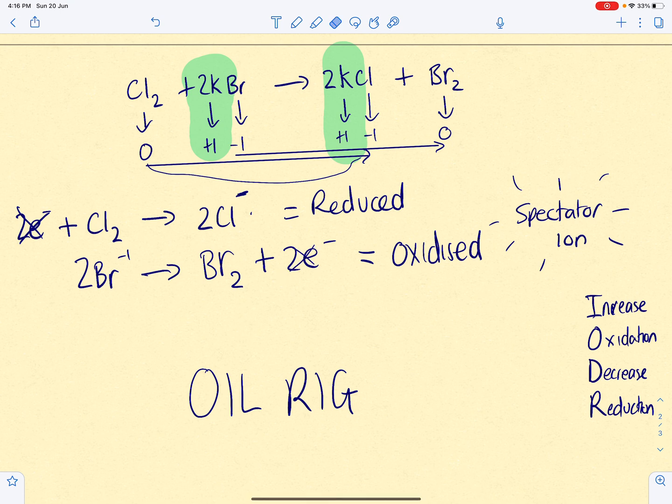You can see here it gave its electrons away. So, it has been oxidized. Oxidation is loss. So, whichever way around you use, it's really easy to identify what's been oxidized and what's been reduced.